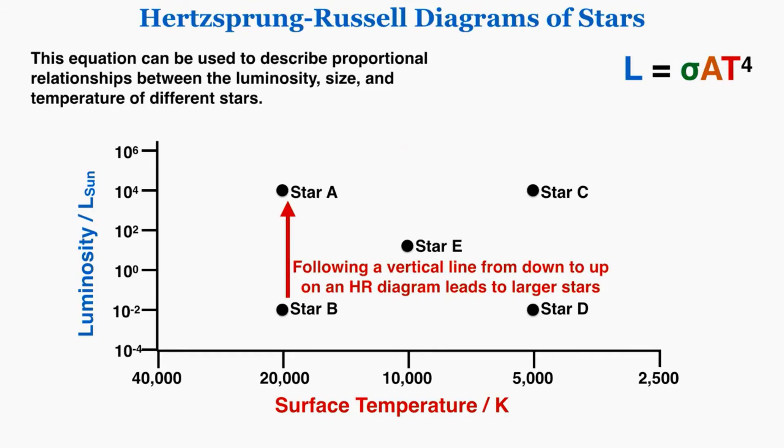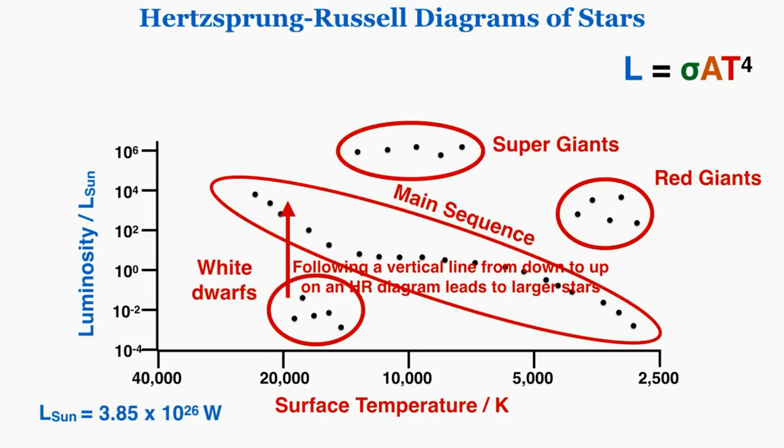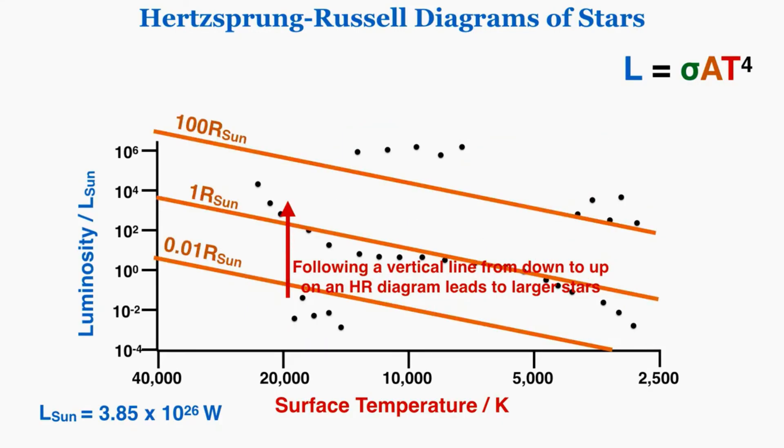Based on that pattern we can see that following a vertical line from down to up on an HR diagram leads to larger stars. This fits our understanding. As we go up the diagram here we go from smaller stars to larger stars, and that also fits the pattern on the lines of constant radius. As I go straight up I can see that the radius of the stars I'm looking at gets bigger and bigger and bigger.